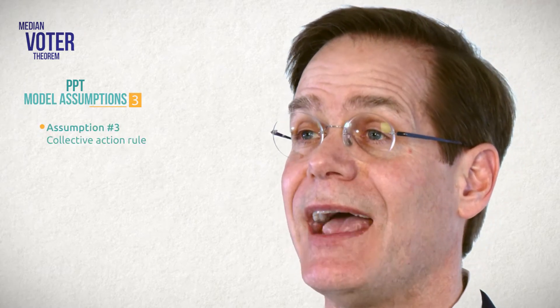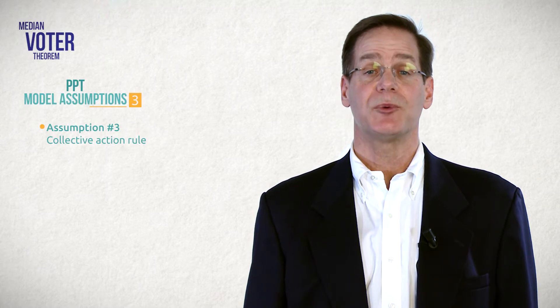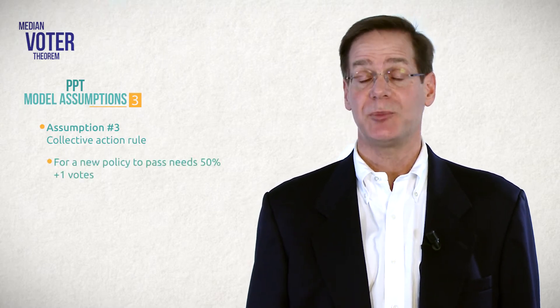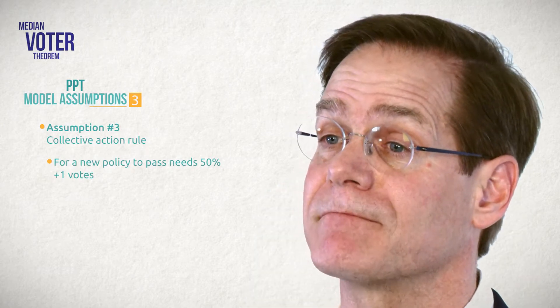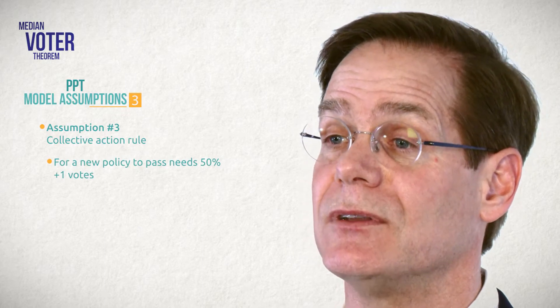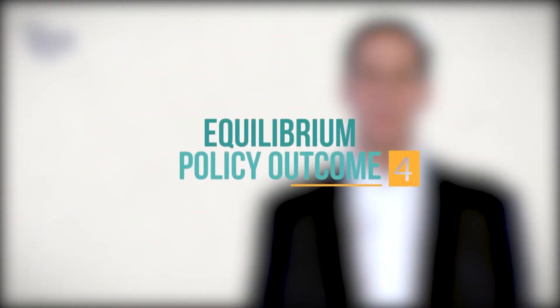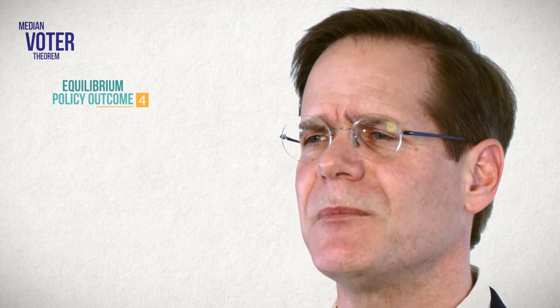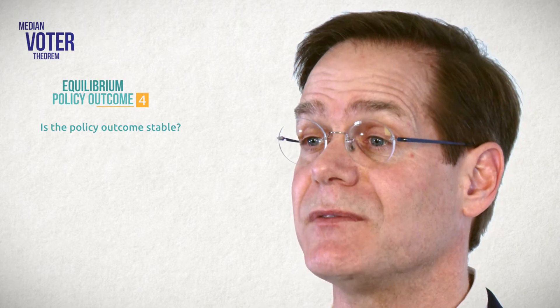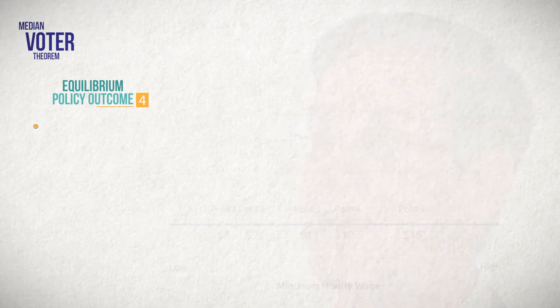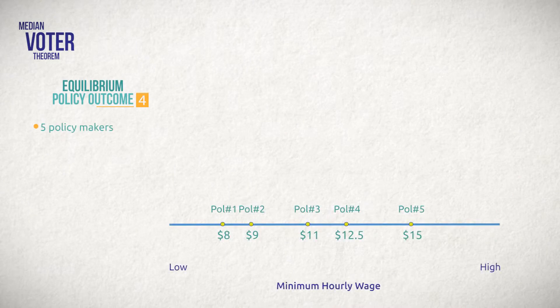The final assumption we will make today is about how collective action decisions are made. We're going to assume a simple majority rule, which means that for a new policy to pass, fifty percent plus one of the policymakers have to vote for the policy. This model could be applied to any single institution with a simple majority voting rule — for example, legislative referendum in Switzerland or votes of no confidence in parliamentary systems both use simple majority rules. Given these assumptions, we can now turn to answering the question: is there an equilibrium? By equilibrium, I mean is the policy stable so that it will not change unless an assumption of the model changes? So let's imagine a simple five-person political institution trying to set a government-mandated minimum hourly wage. Under simple majority, they need three votes for a policy to pass. The policy ideal points for the politicians are represented in this figure.